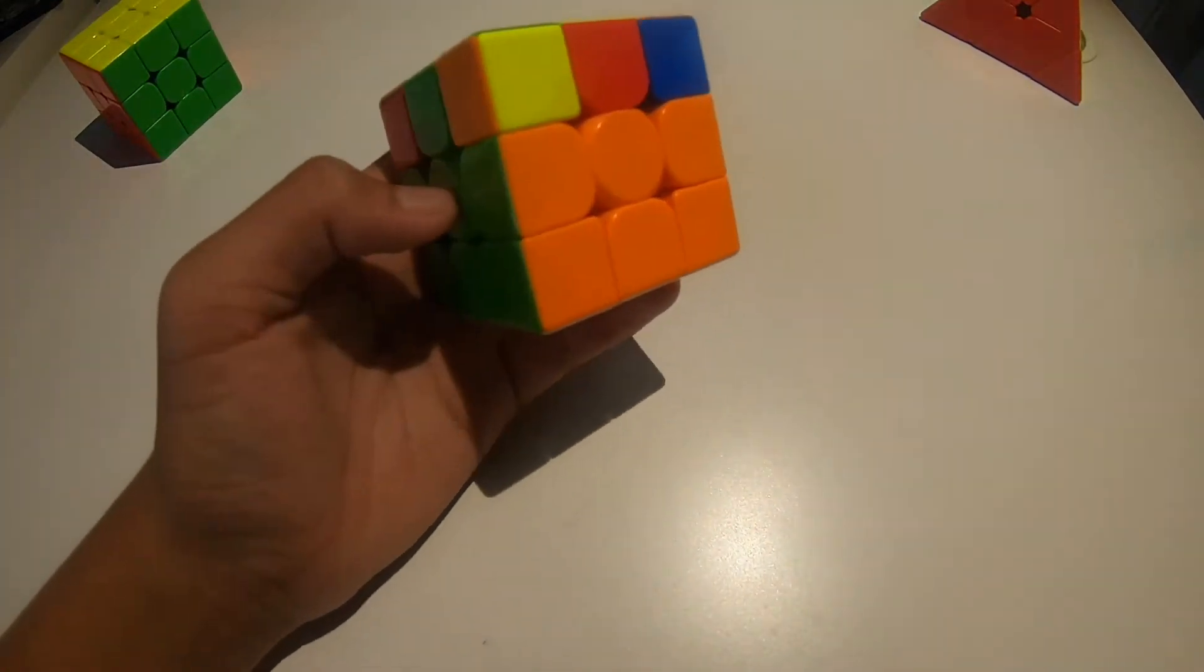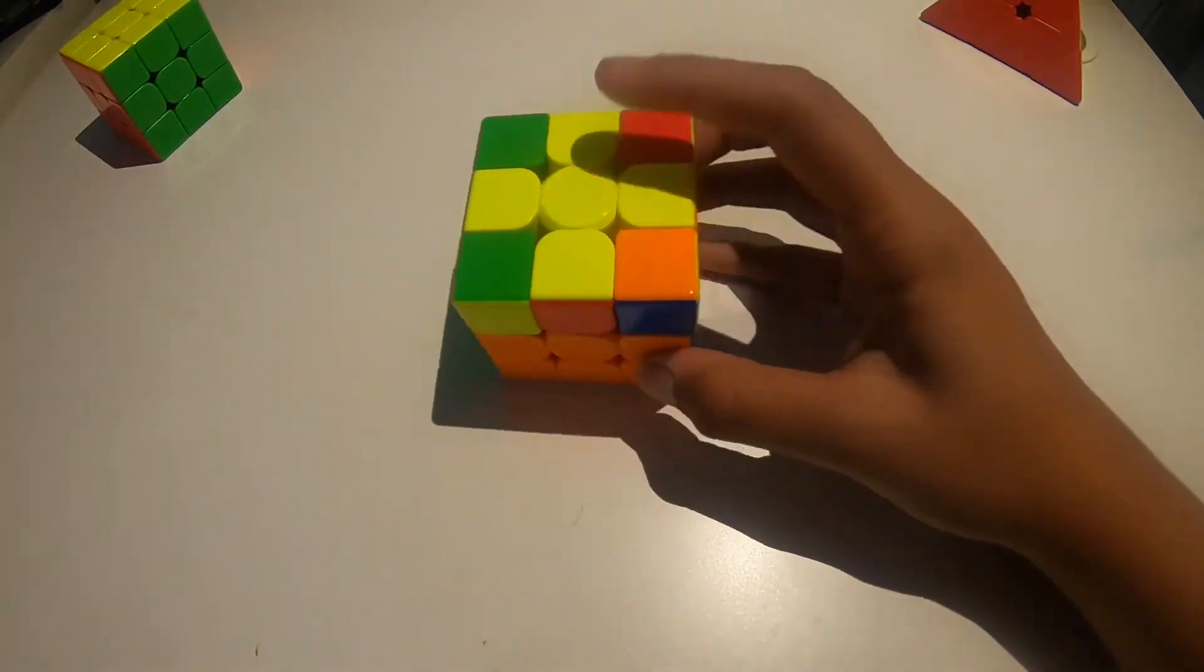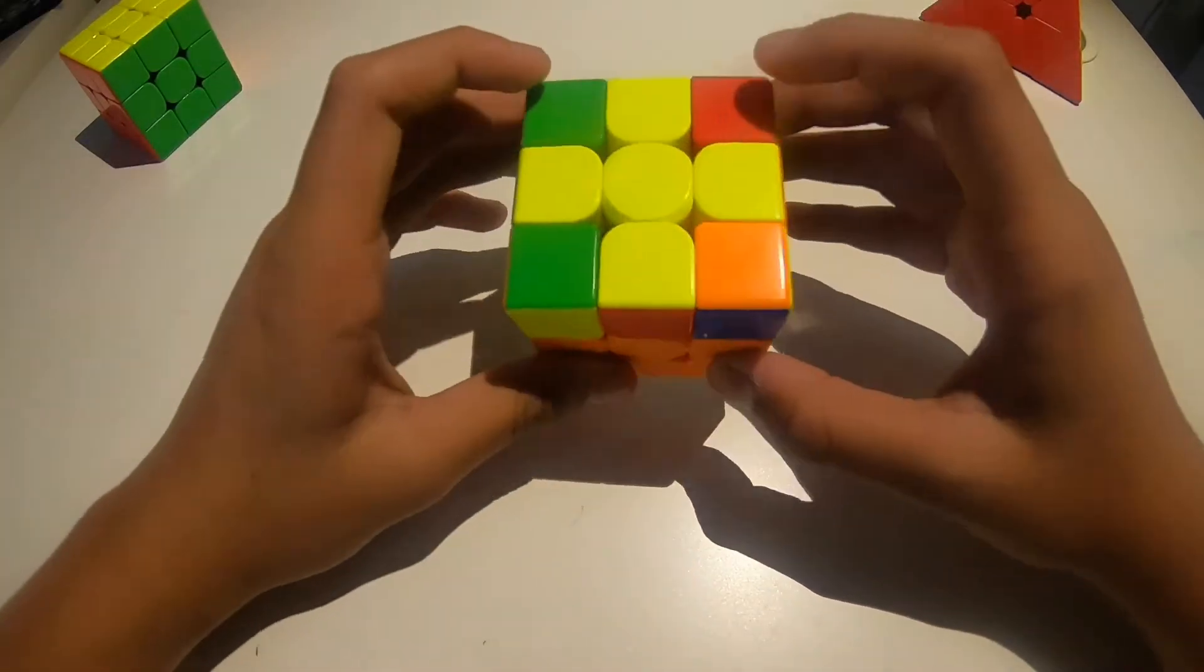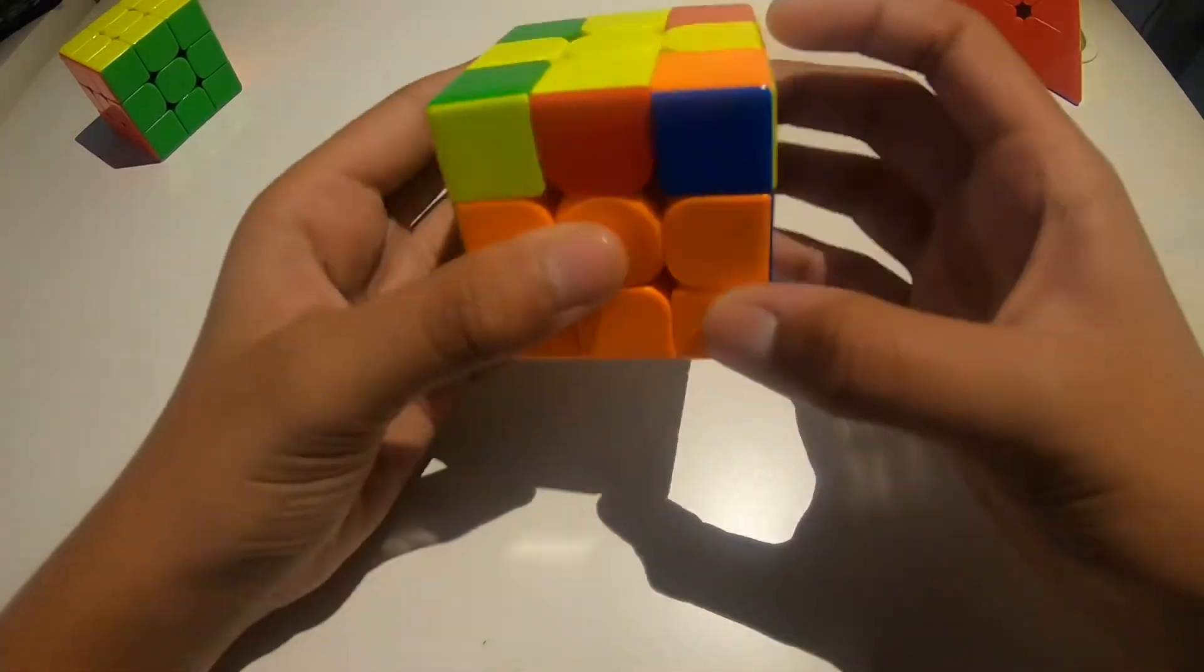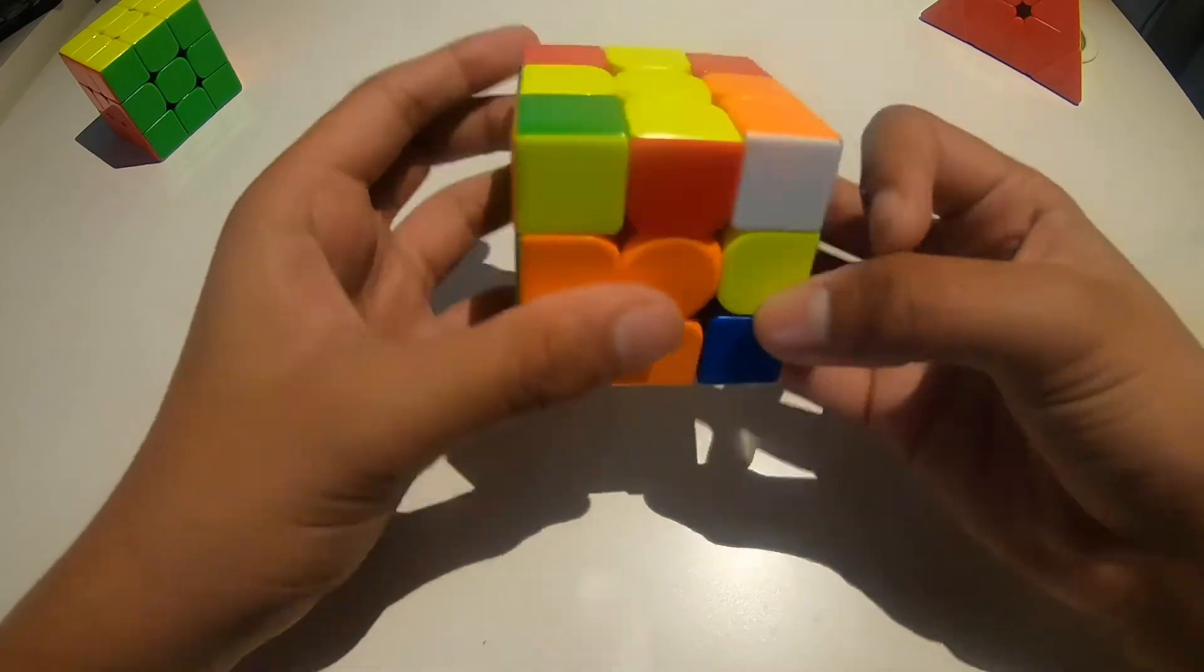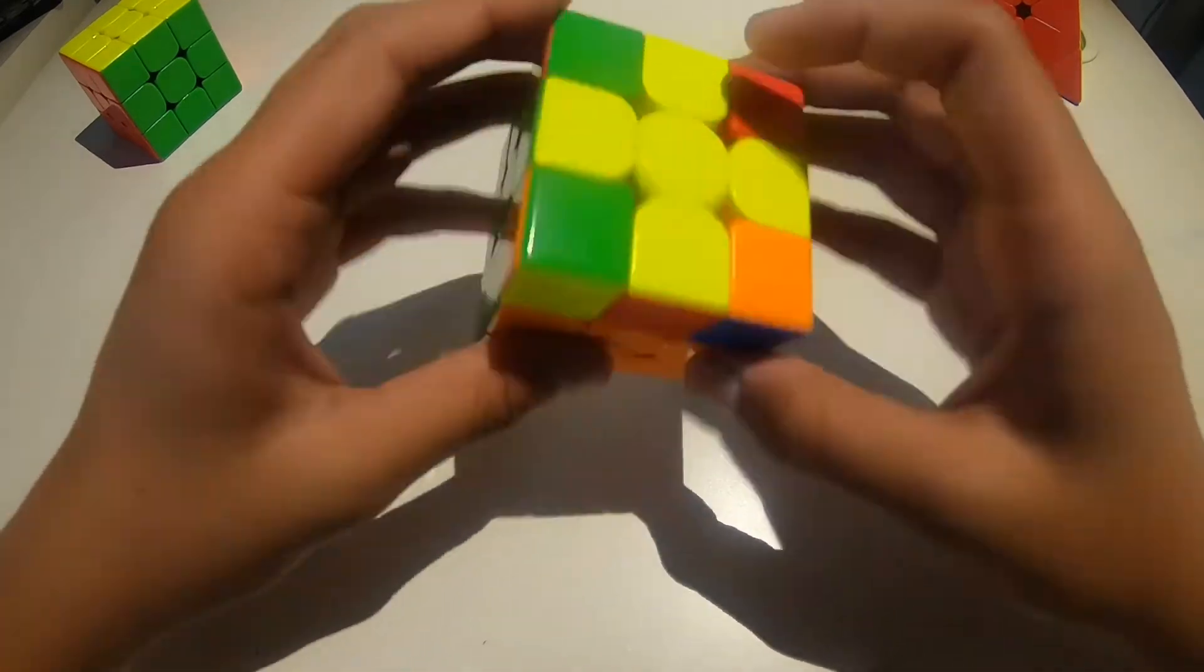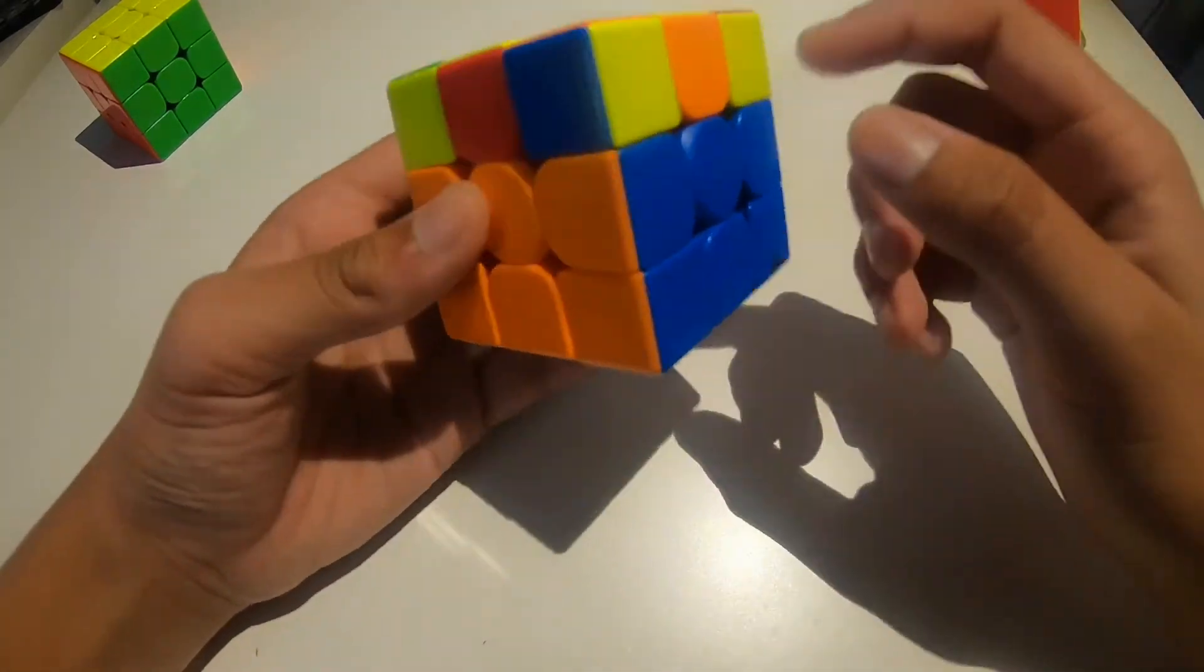So, the general consensus is, basically, split pairs are usually better for, when I say split pair, I mean when the pieces are not together. They're usually better for front slot, but when they're together, they're usually better for back slot.